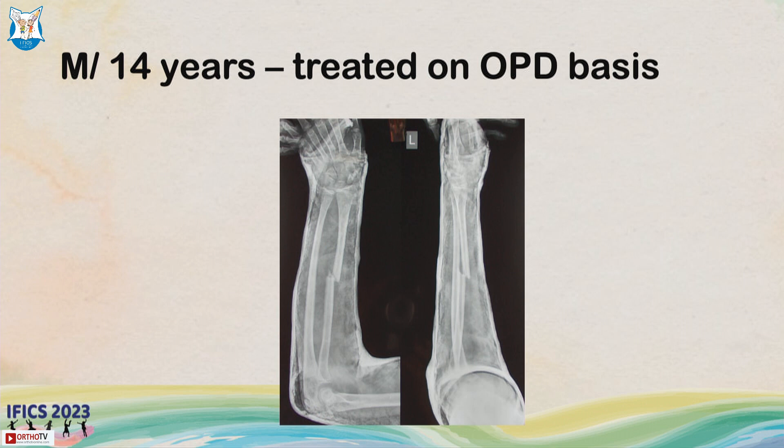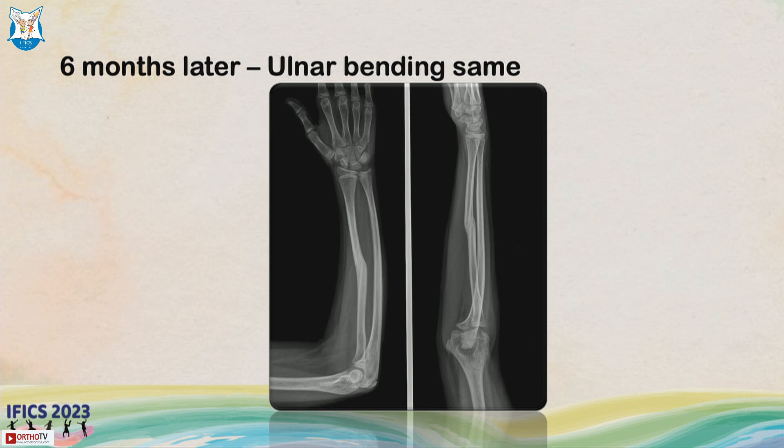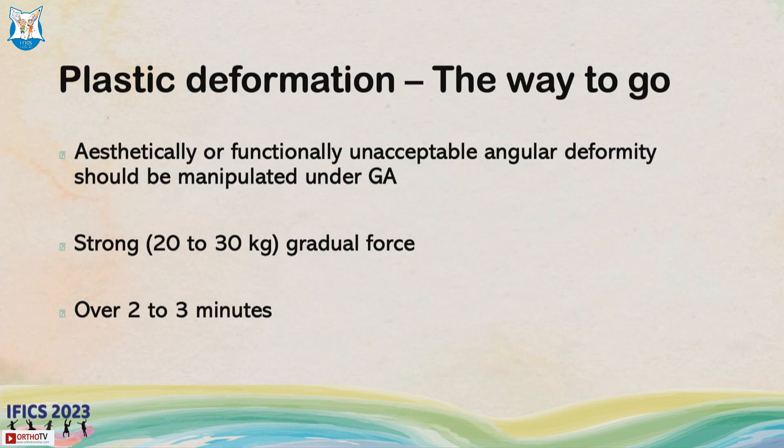A 14-year-old male treated on an OPD basis — nothing was done for this and it remained after 3 months like that. Even after 6 months the radius was remodeling well but the ulnar did not remodel, because there are multiple fractures and you do not expect mid-shaft to remodel well, especially when there is angulation.